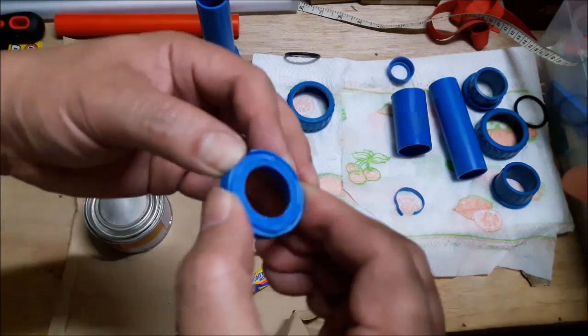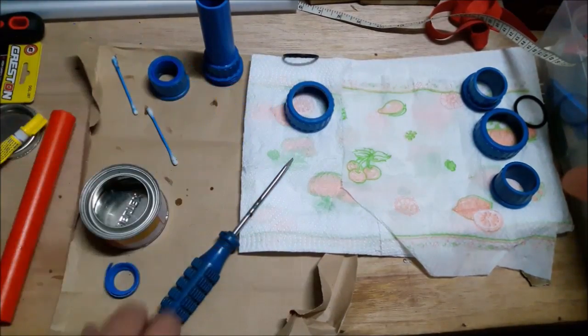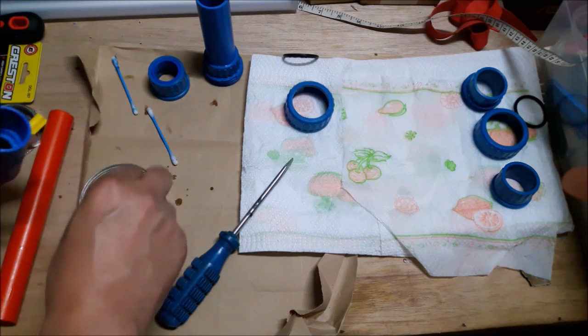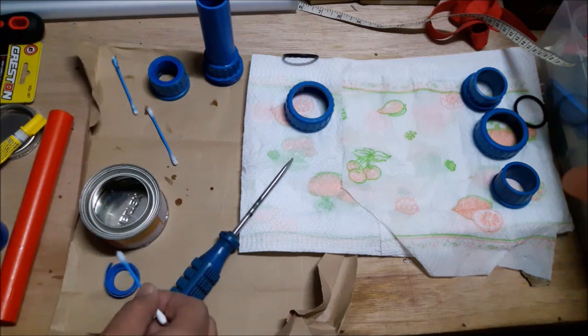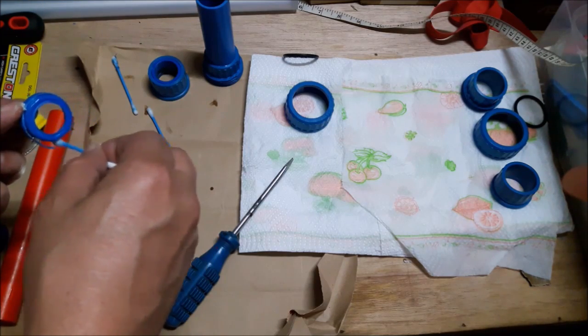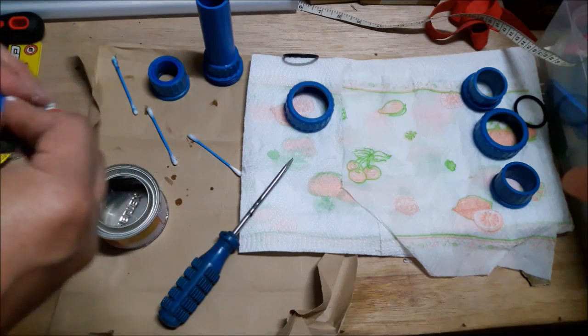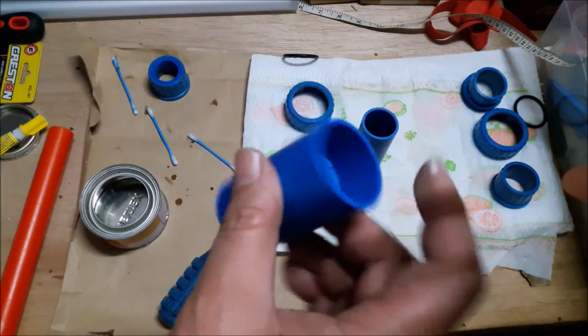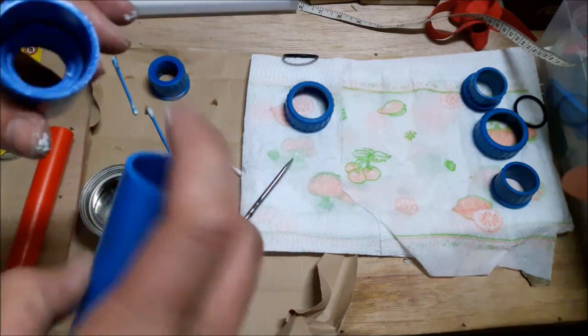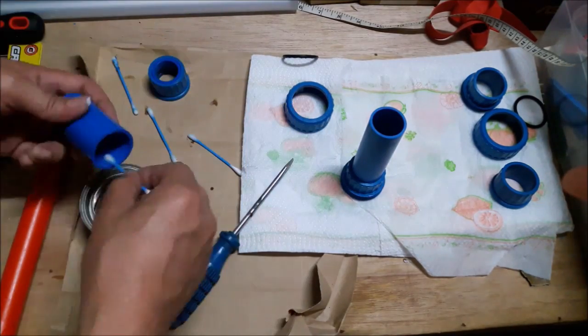So now again, glue that thin piece of PVC. And we'll apply some of the cement to the inside of the large slip coupling. You can use a brush to apply the PVC cement, but for small projects like this, small Q-tips will actually be better, because you can just discard them when you're through. You don't have to clean them anymore.